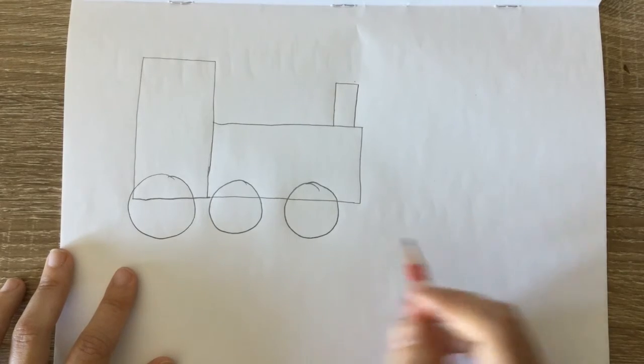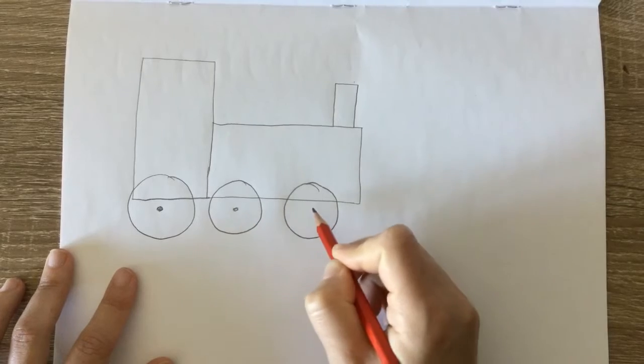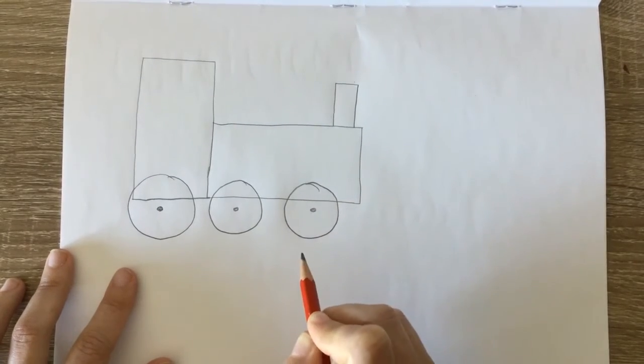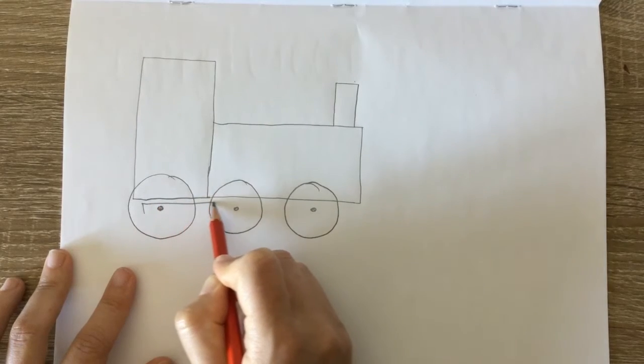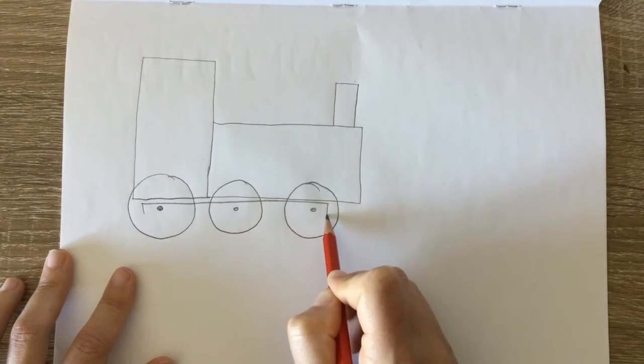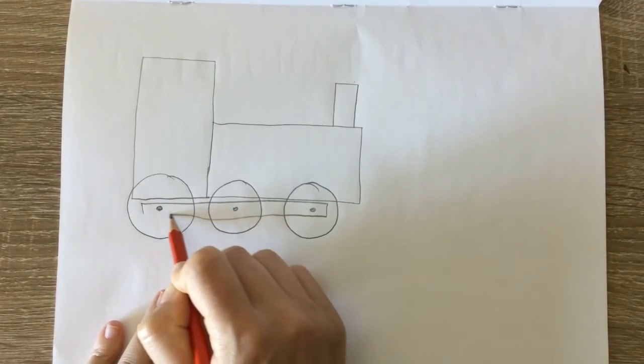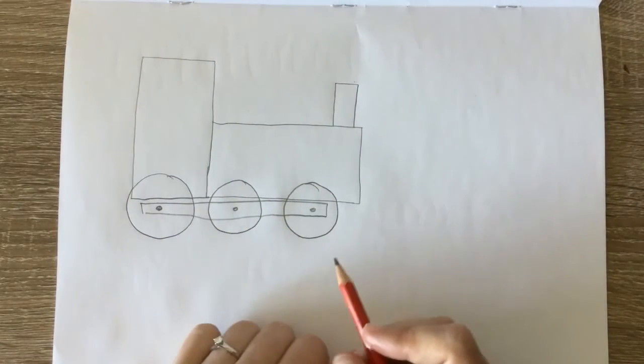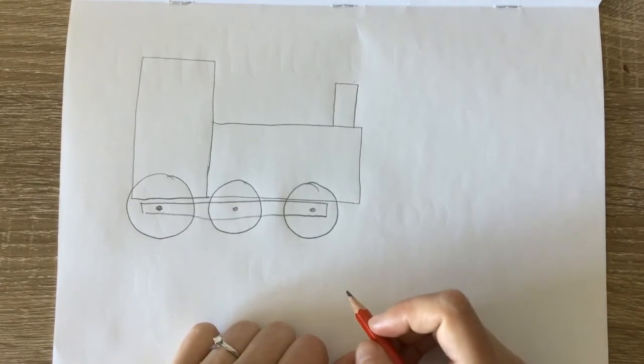Now a train normally has their wheels connected and that's how they move. So what I'm going to do is draw a long rectangle across like that. Oops. Put my page down. There. Like that. It's a bit easier using the ruler but I'm going to freehand it today.